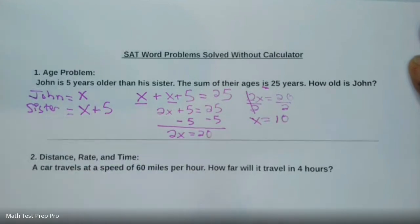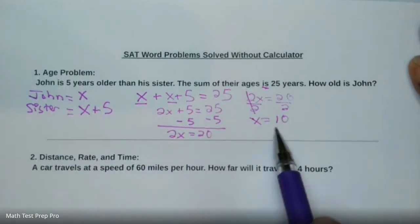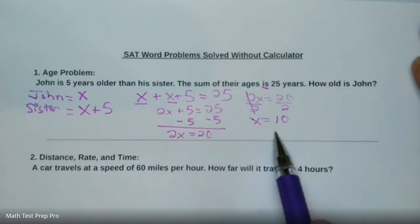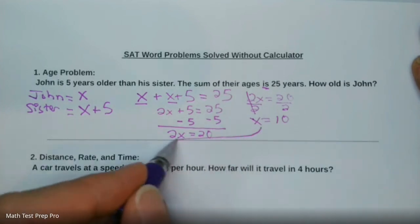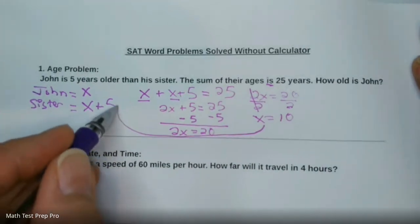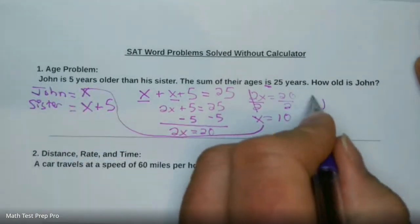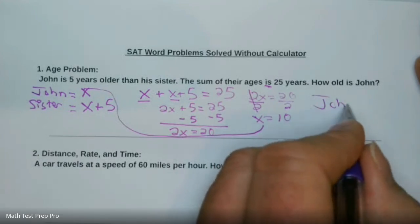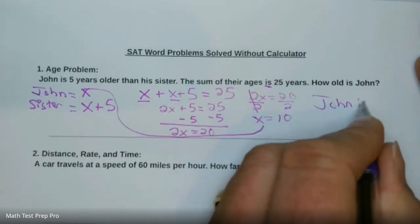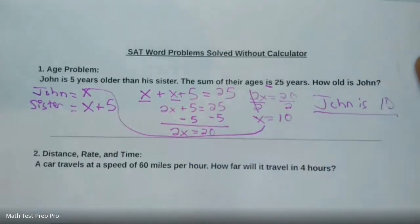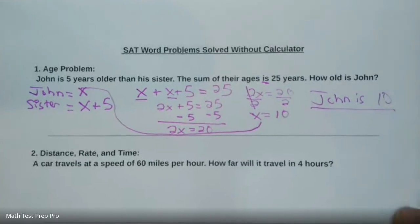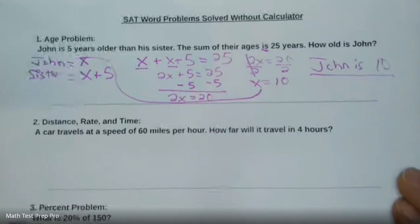To go back, we know X is 10. The question is asking how old is John. So if we plug in X for John's age, we'll know that John is 10. That's going to be the answer. All right, let's move on to the next problem.